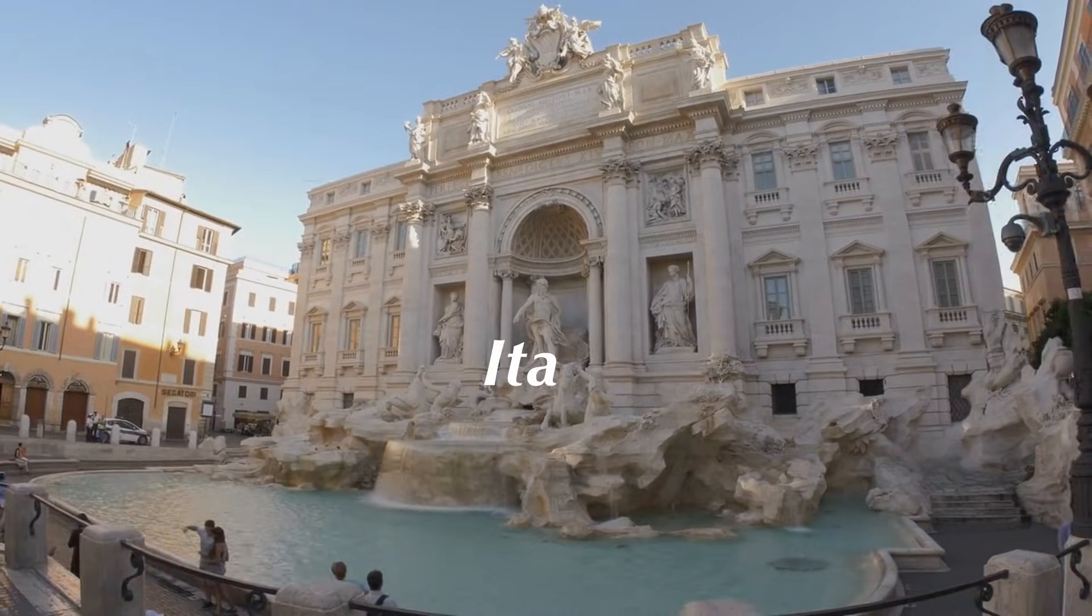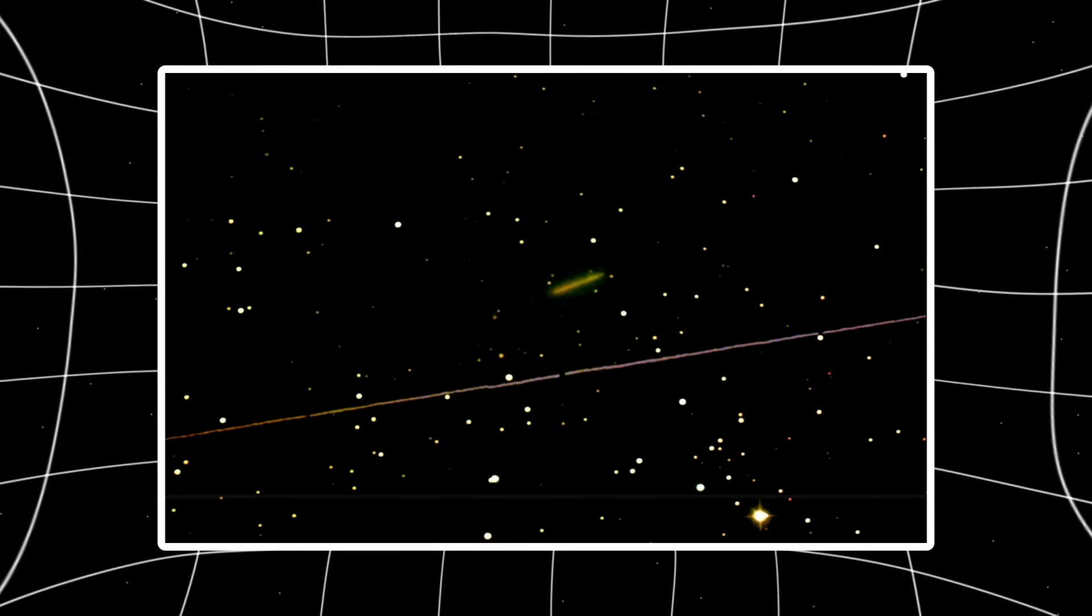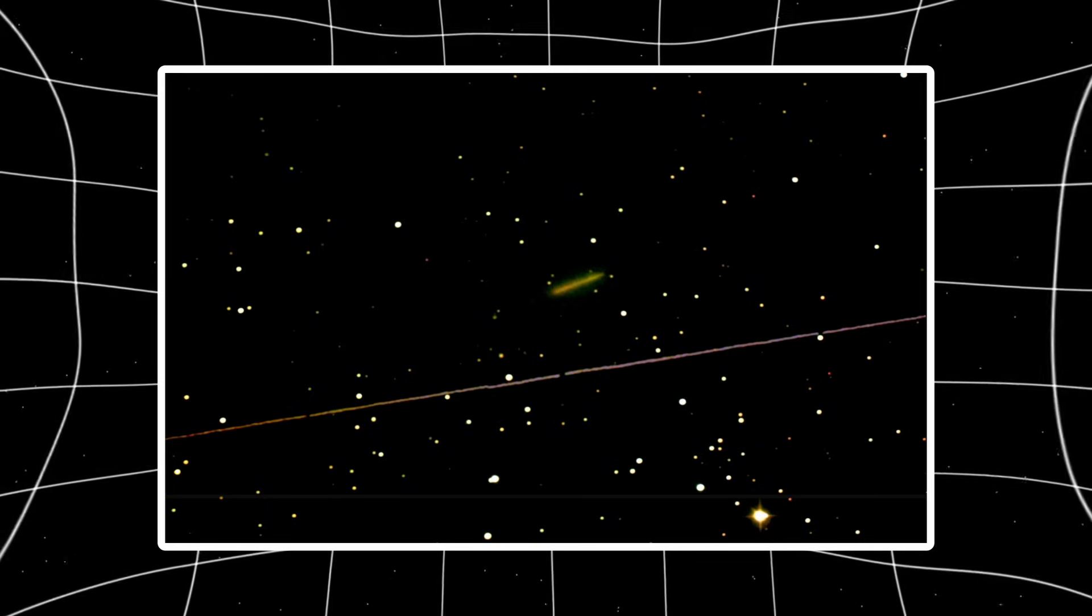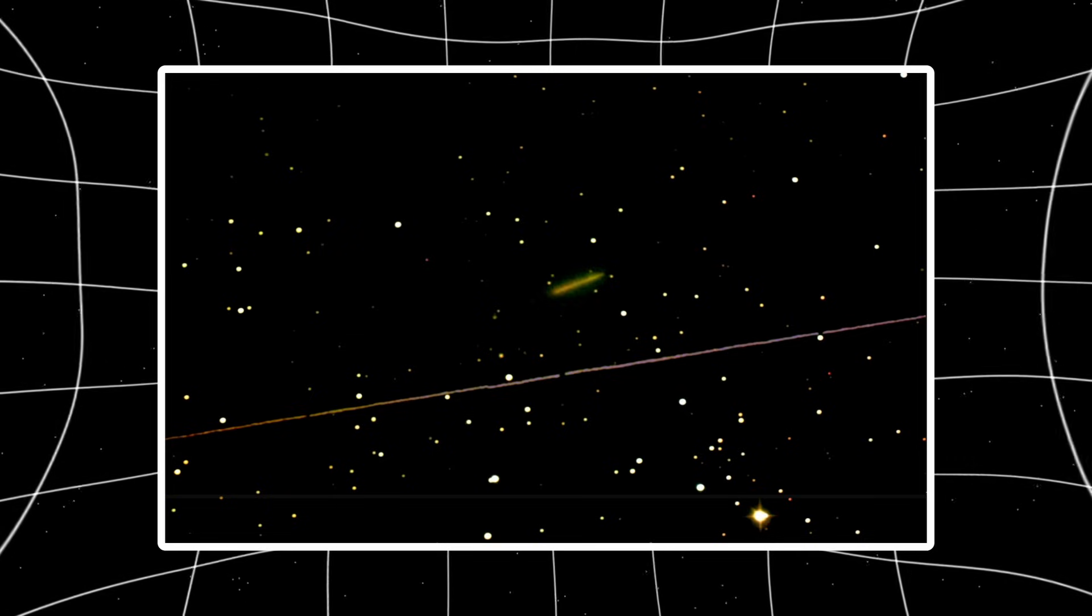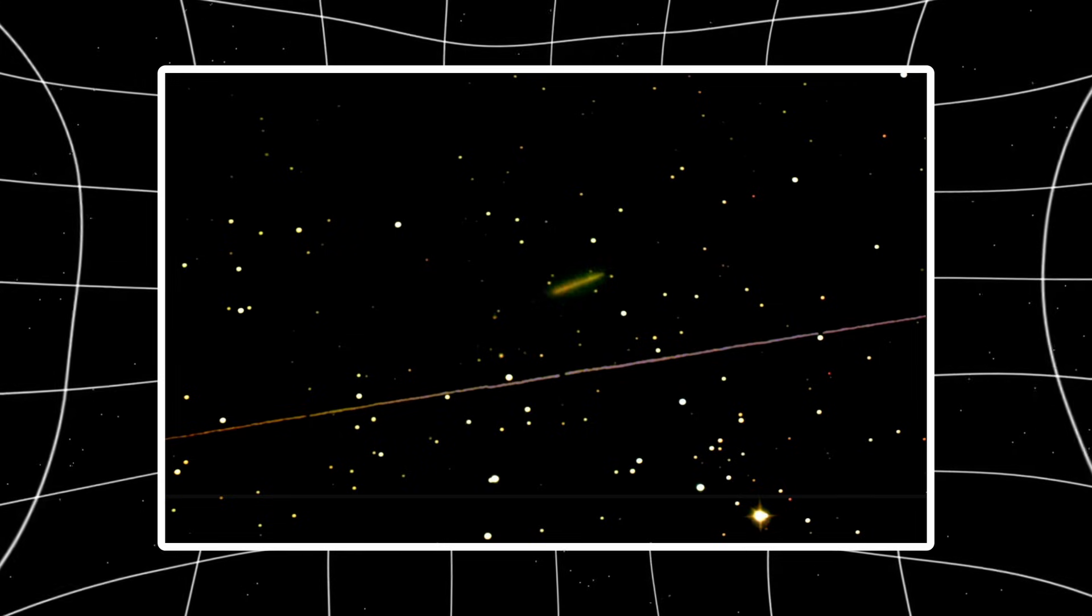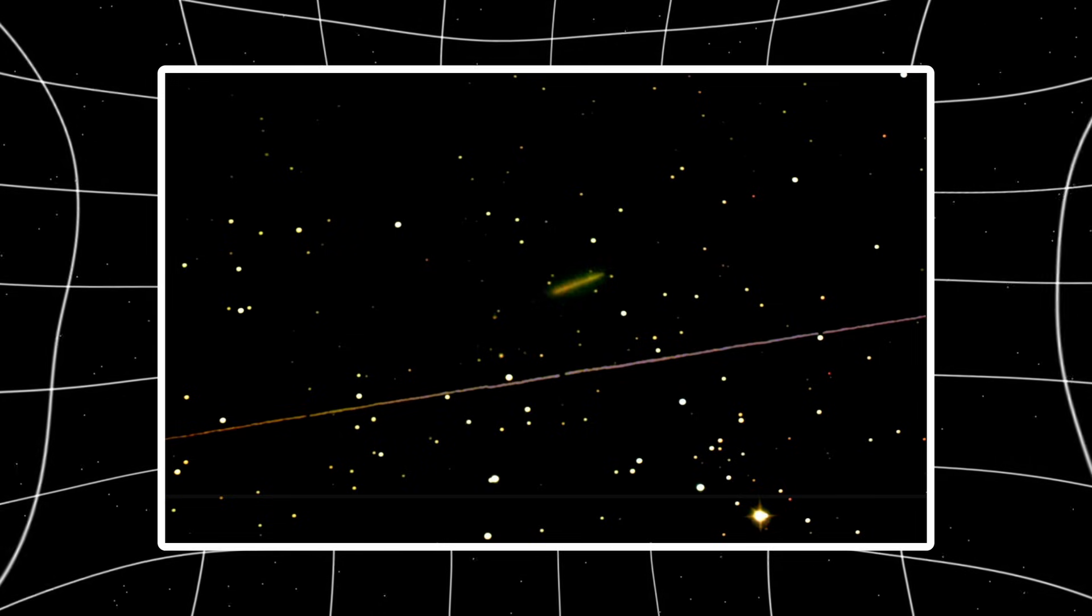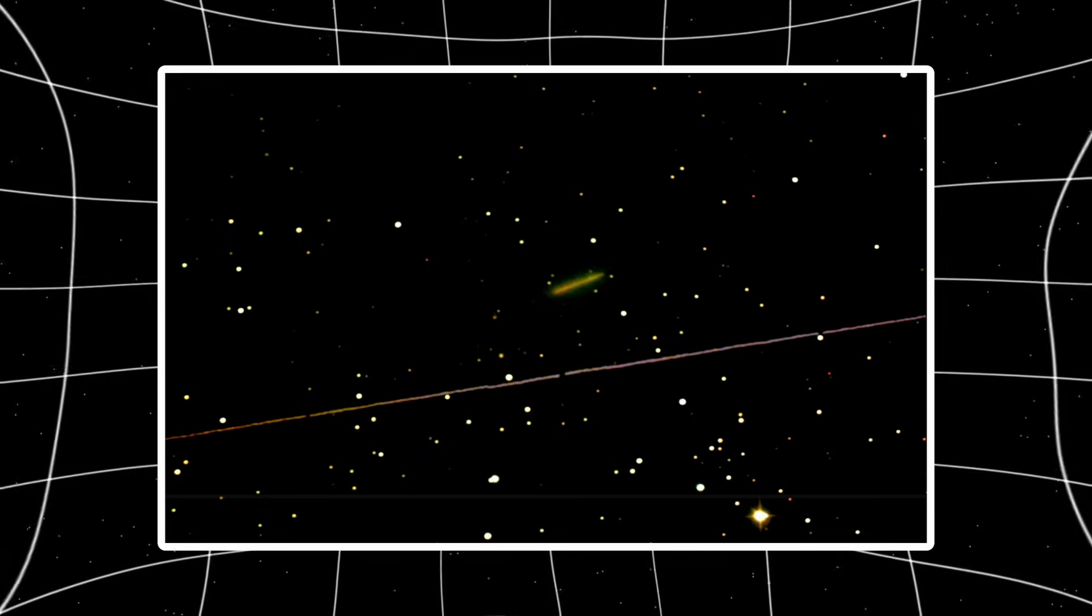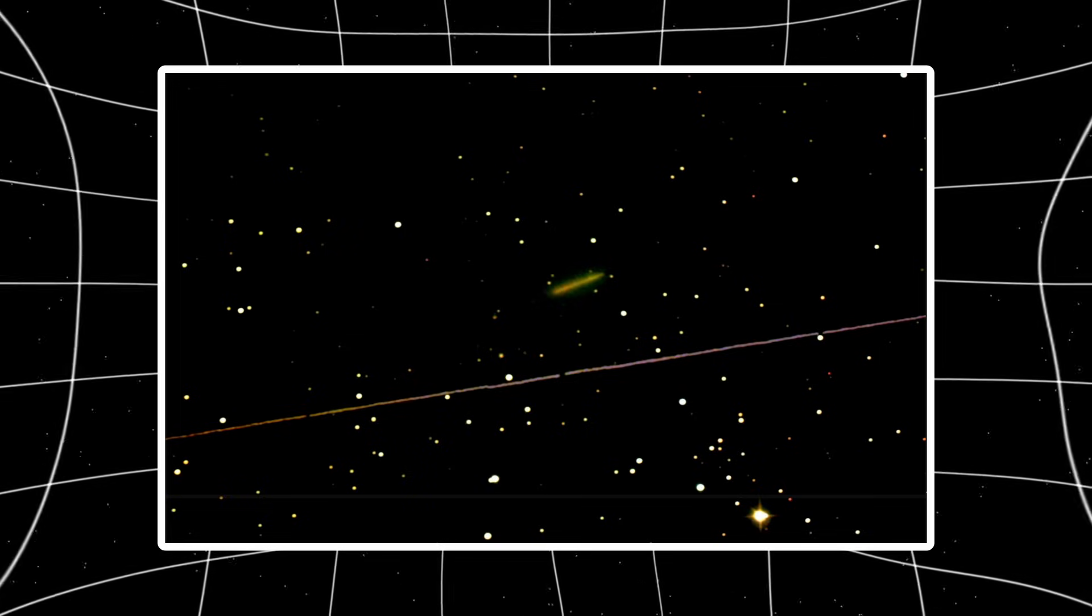December 22nd, Italy. A backyard astronomer points a 25 centimeter telescope at empty space and captures something most people will never notice. Two tracks, both moving. One short and diffuse. One long and perfectly straight. The short one? That's 3i Atlas, an interstellar visitor.